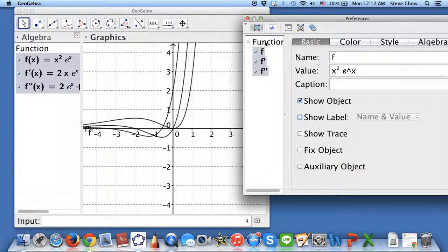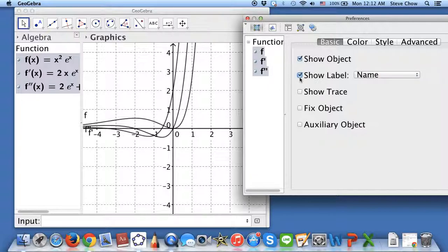And a shortcut is that if you click on the function right here, it's going to select all the functions that you have. And you can just check them off. So you see all the labels disappear.